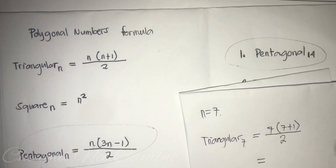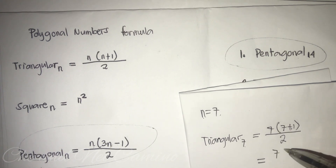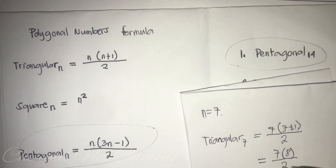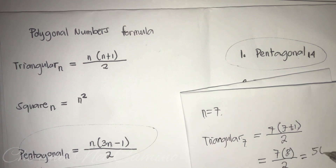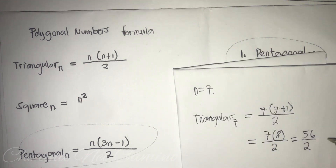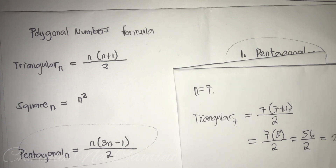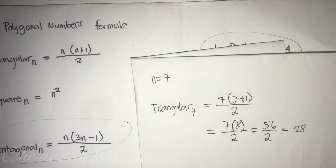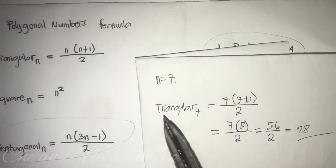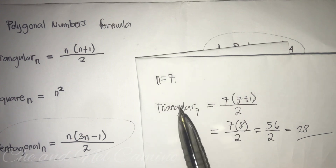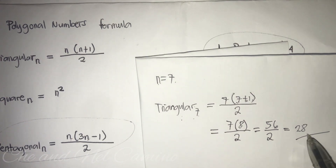7 times 8 is 56, and then 56 divided by 2 is 28. So the total number of dots of Triangular(7) is 28.